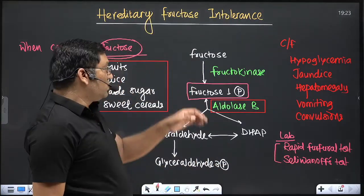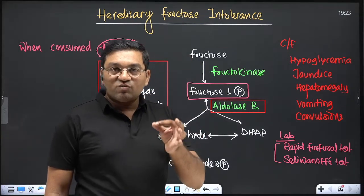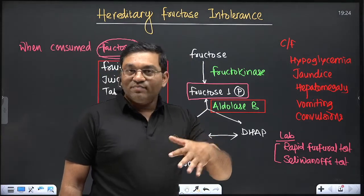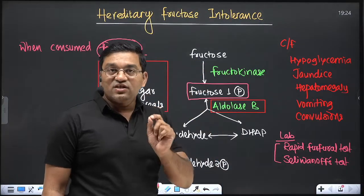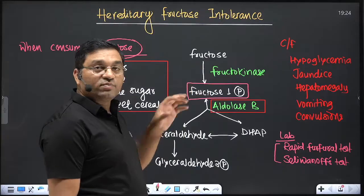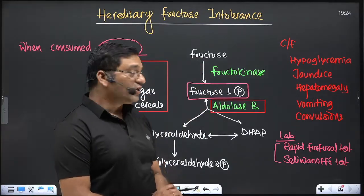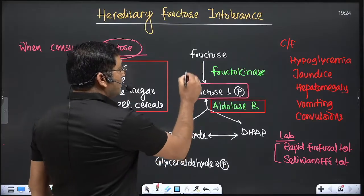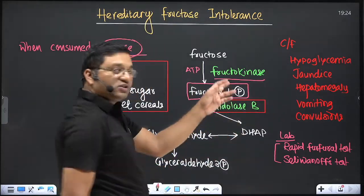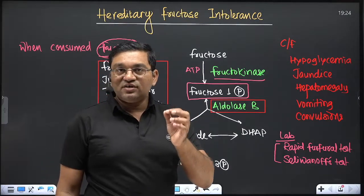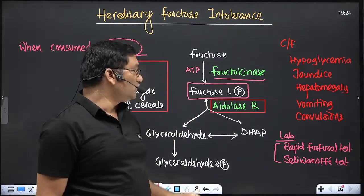Fructose is converted into an intermediate of glycolysis and metabolized there — there is no separate pathway. This metabolism occurs mainly in the liver, where fructose is phosphorylated into fructose-1-phosphate by fructokinase. A deficiency of fructokinase causes essential fructosuria, meaning excretion of fructose in the urine, which is an asymptomatic condition.